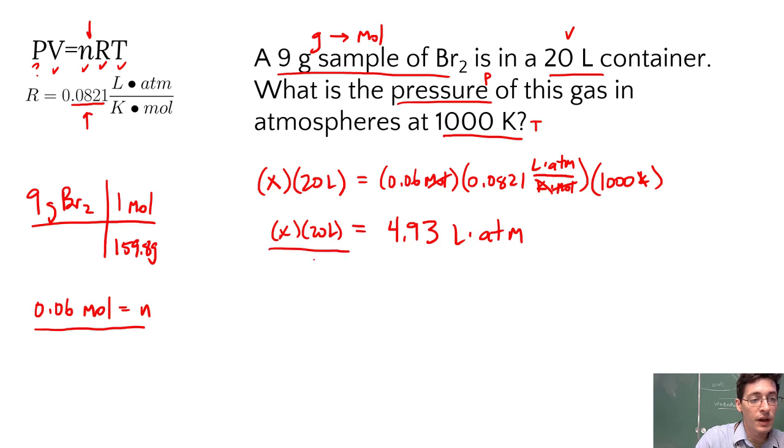To solve, we're going to divide by 20 liters. Divide by 20 liters. That's gone. 4.93 divided by 20, and then liters cancel out, top and bottom.